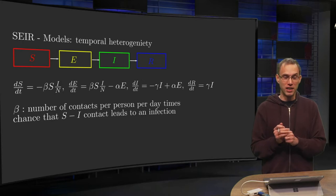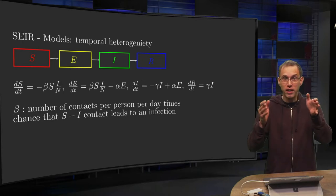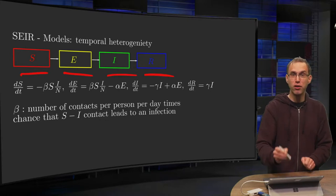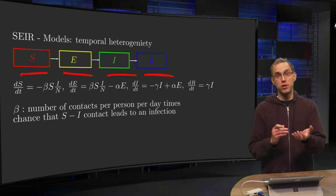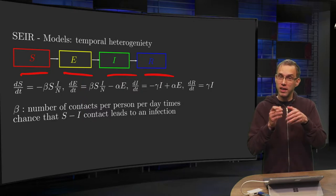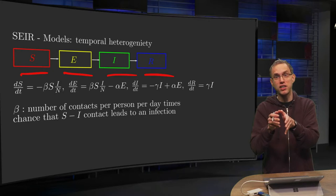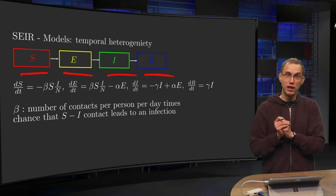We have our SEIR model. We subdivide our full population into susceptibles, exposed, infected, and recovered. People are susceptible, you can get an infection, first you get in the exposed stage, then in the infected stage, and finally in the recovered stage.